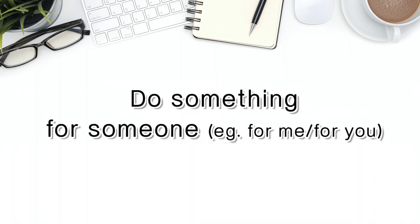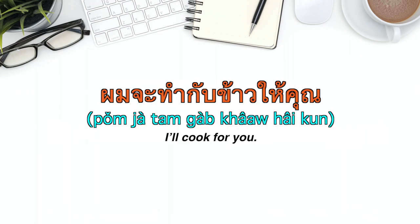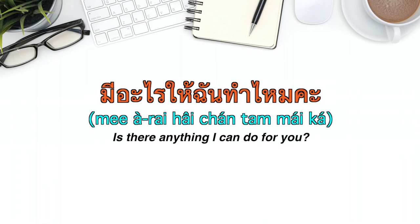ให้ is also used when doing something for someone. ผมจะทำกับข้าวให้คุณ — 'I'll cook for you.' Note: we typically say กับข้าว rather than อาหาร; saying ทำอาหารให้คุณ is fine but doesn't sound as natural. มีอะไรให้ฉันทำไหมคะ — 'Is there anything I can do for you?'